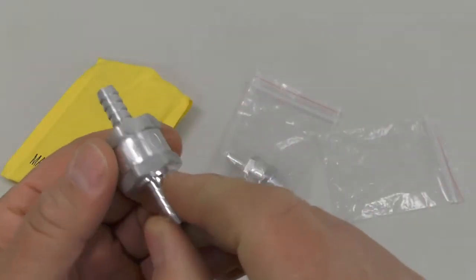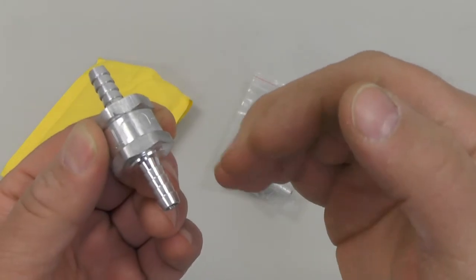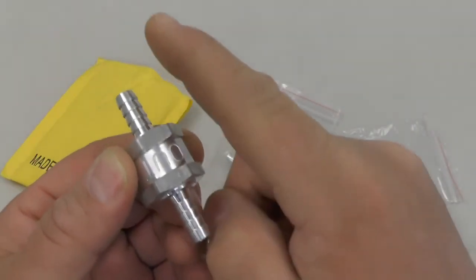But if you flip it around and try blowing the wrong way, the diaphragm inside the check valve will close and prevent the air from flowing to the other side.